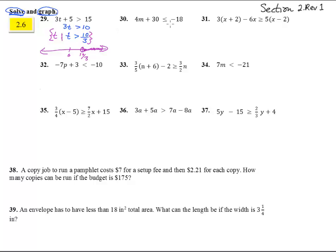Let's try the next one. Subtract 30 from both sides, and we have 4m is less than or equal to negative 48. Divide both sides by 4, that is m less than or equal to negative 12. Notice that we did not switch the sign there, because we didn't divide by a negative number. We divided by 4.